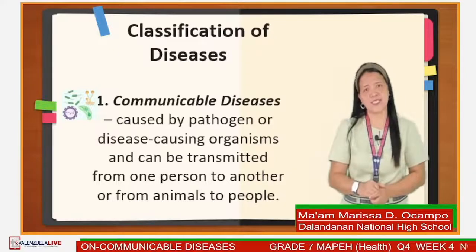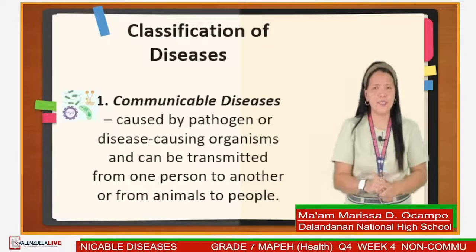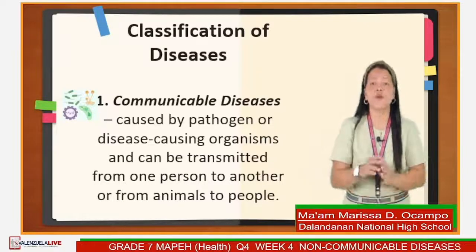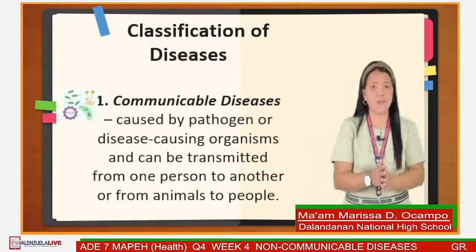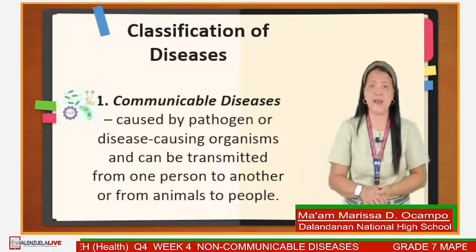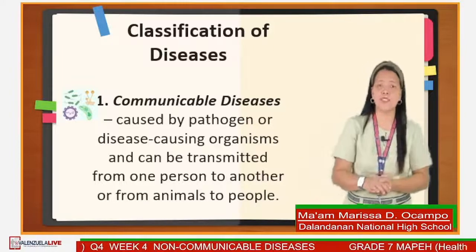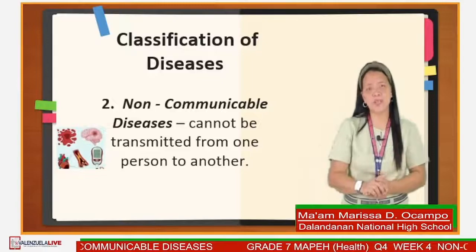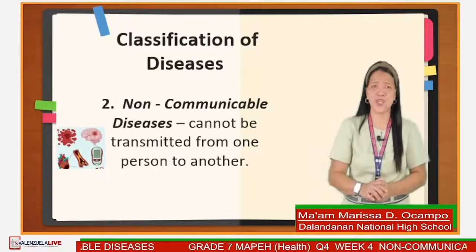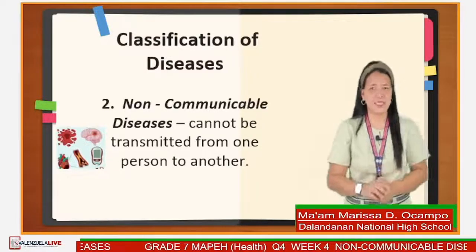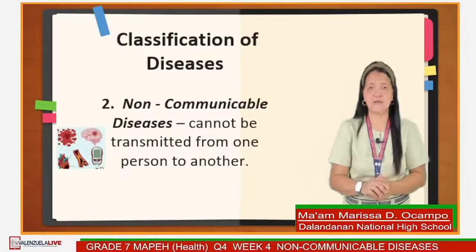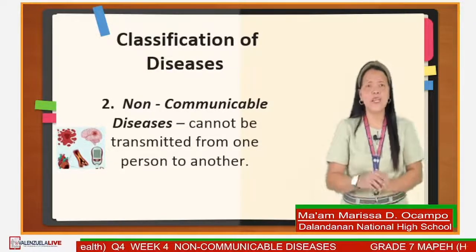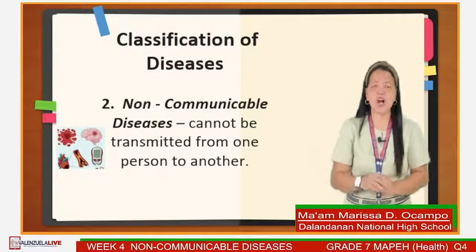Communicable diseases are caused by pathogens or disease-causing organisms and can be transmitted from one person to another or from animals to people. Examples are influenza, cholera, dengue fever, tuberculosis, and warts. On the other hand, non-communicable diseases cannot be transmitted from one person to another. Many of these diseases are caused by unhealthy lifestyle. Examples are cancer, diabetes, arthritis, renal failure, asthma, and cardiovascular diseases.